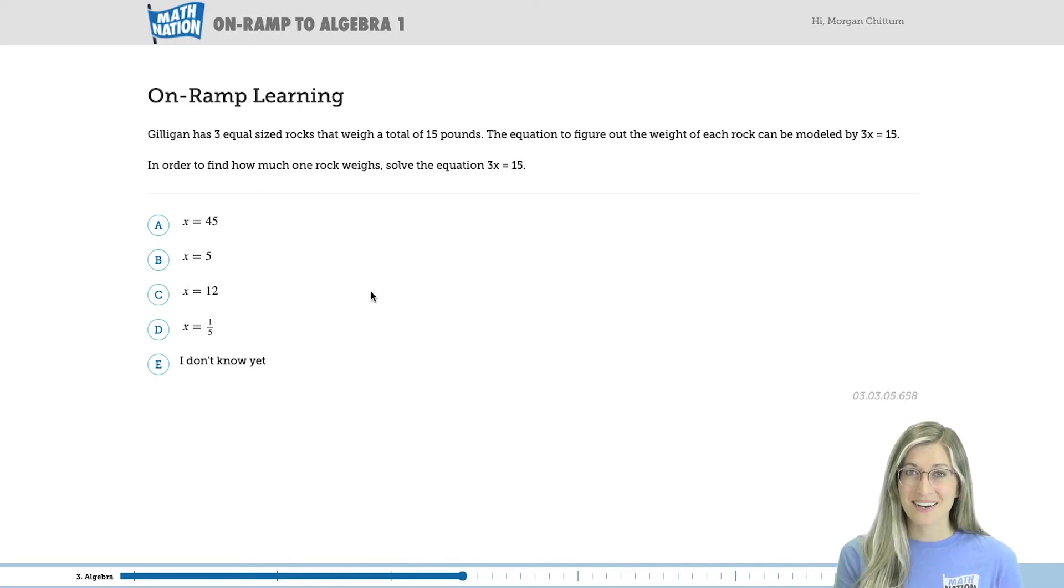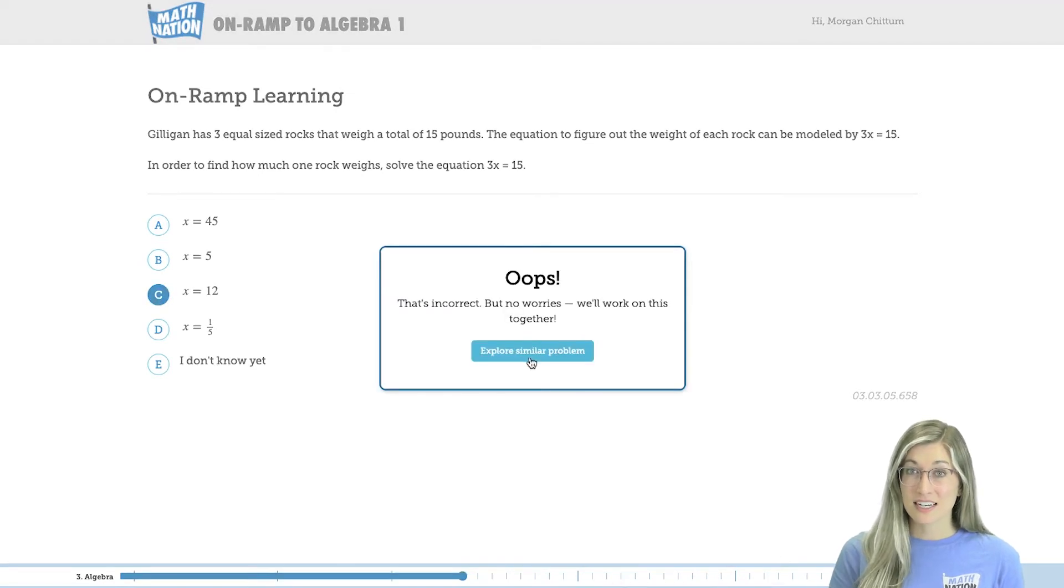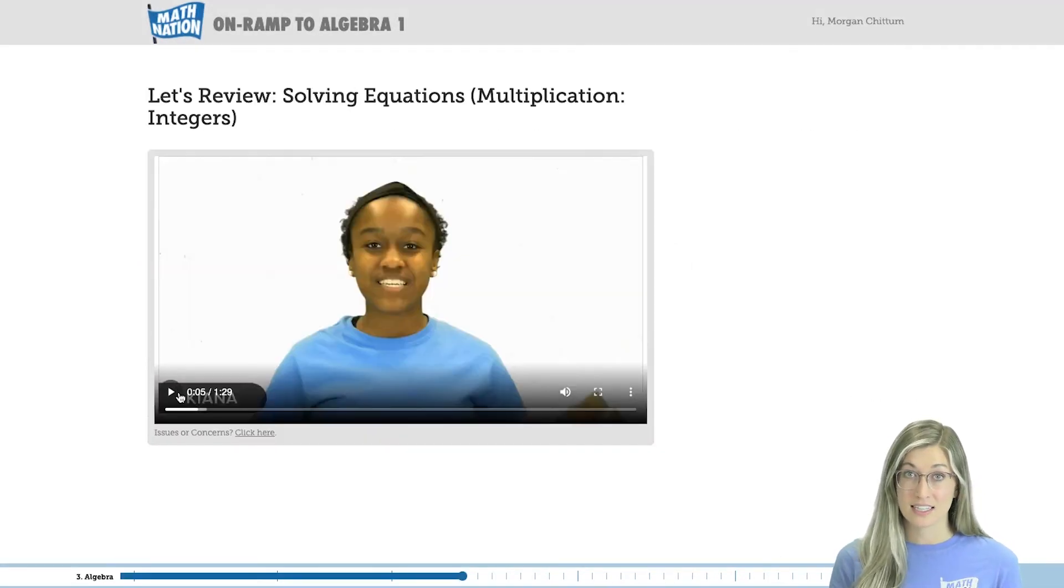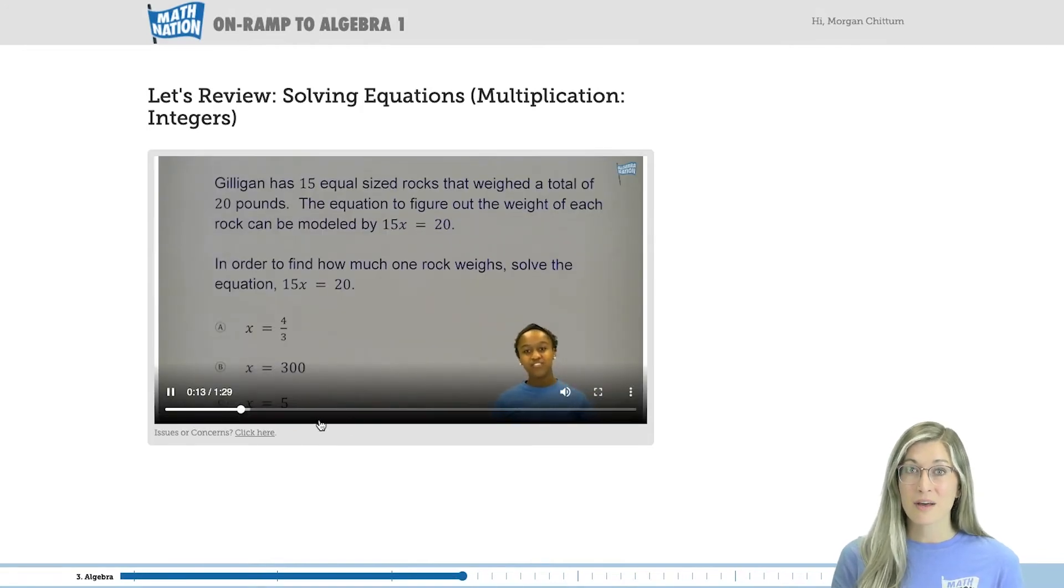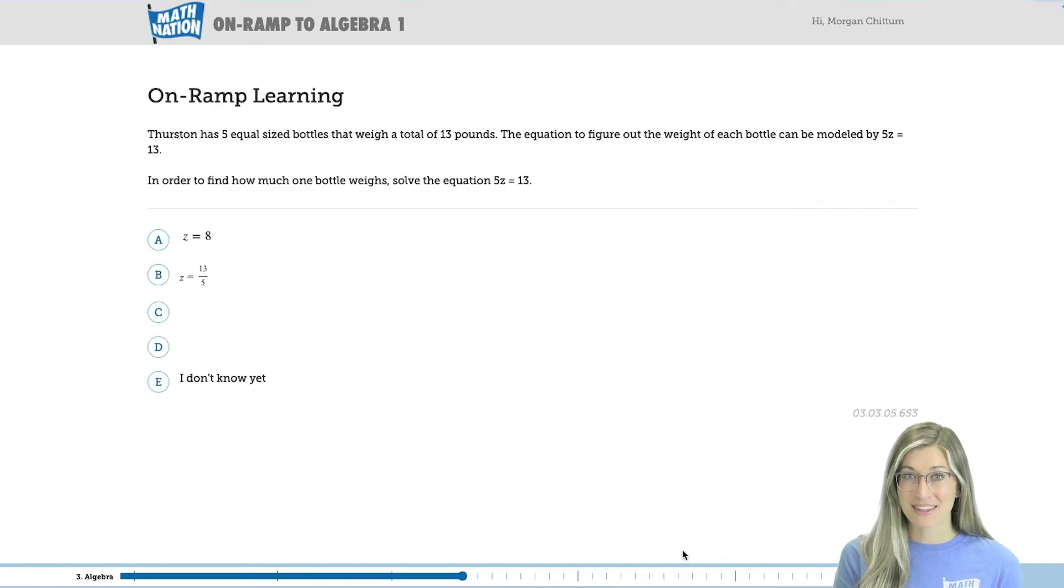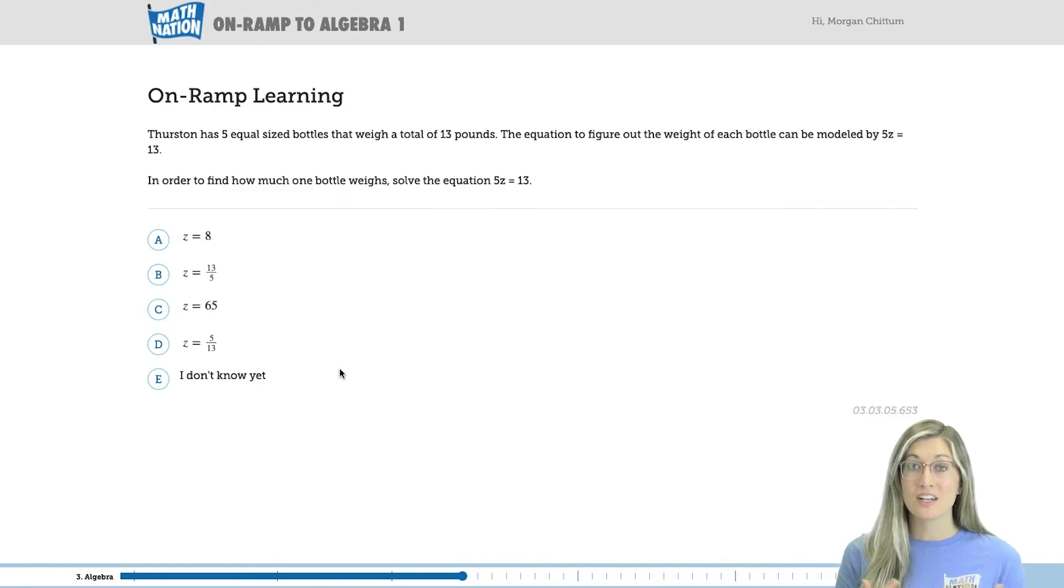After completing the notes and video, the on-ramp tool checks students' understanding. If the student doesn't answer the question correctly or selects that they don't know the answer yet, they're given another video from their study expert based on a similar problem. After working through that similar problem with their study expert, students are given another opportunity to show their understanding.